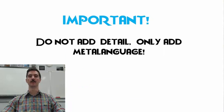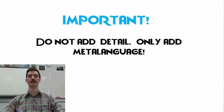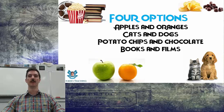When you're doing this process, it's important to remember you're not adding detail — you're just adding meta-language. Of course, adding detail would improve the pieces I've provided you, and the brief paragraphs aren't that detailed, but detail alone doesn't add what we're looking for here. In the comment section below this video, your four options will be to either compare apples and oranges, which is the one we'll do in this video, cats and dogs, potato chips and chocolate, or books and films.